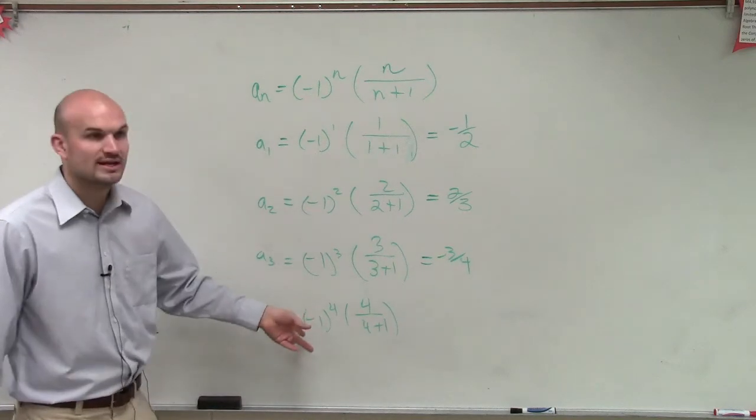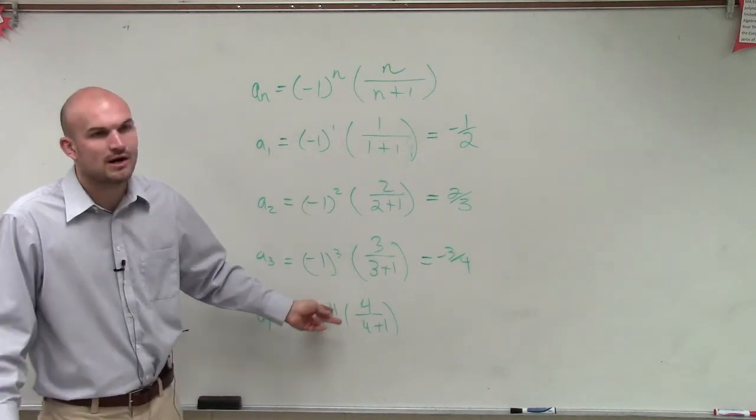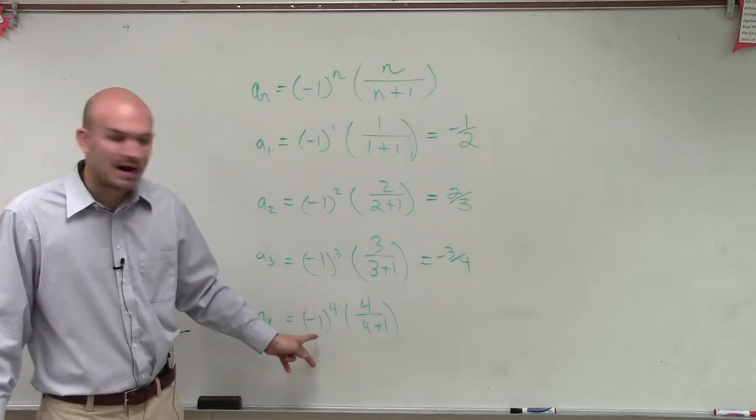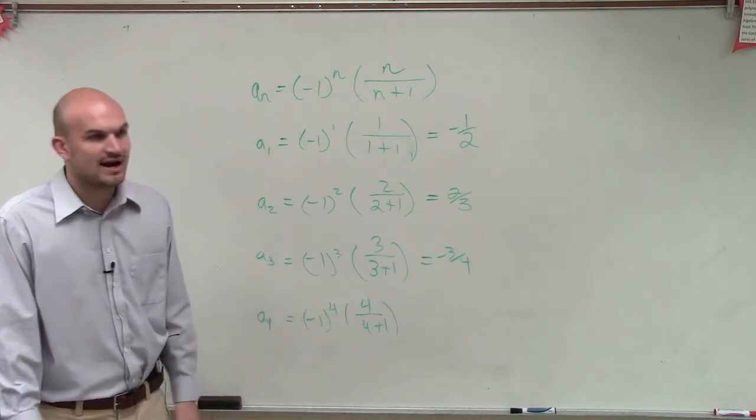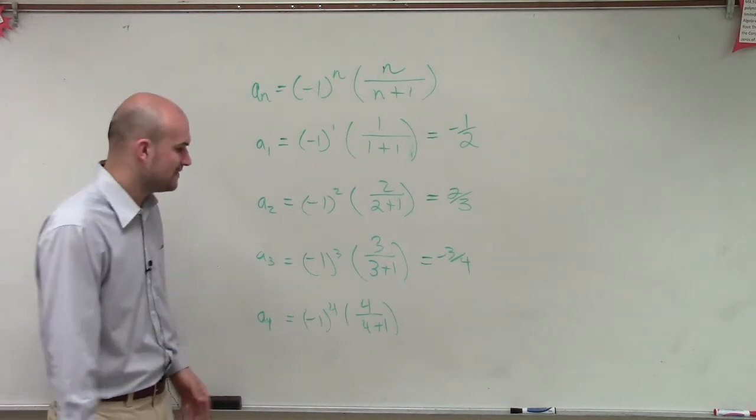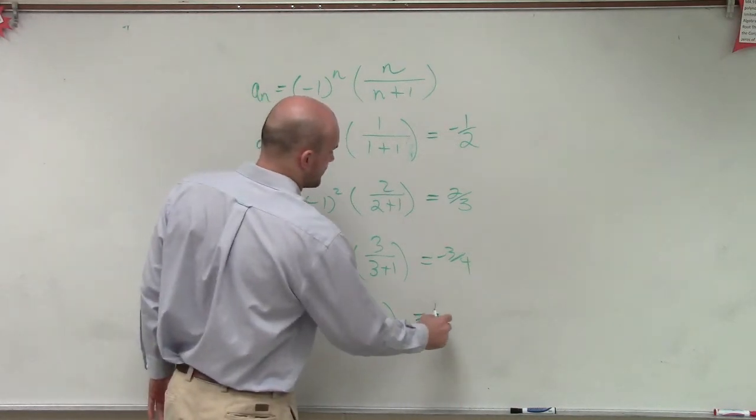And then, obviously, we know that now, oh, I don't even need to compute it. I know it's just raised to the fourth power. That's even. So therefore, this is going to be positive 1. 4 divided by 4 plus 1 is 5. So 4 fifths times positive 1 is 4 fifths.